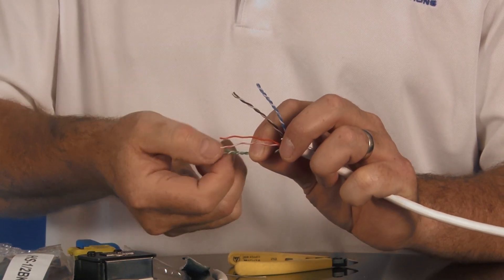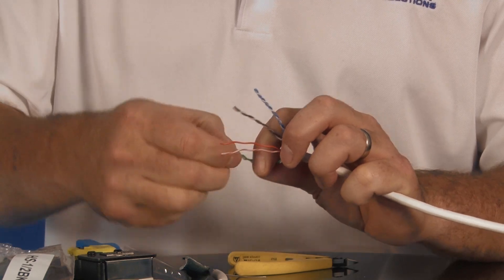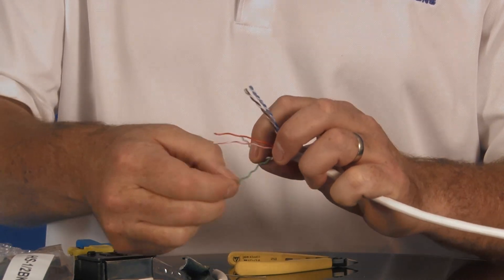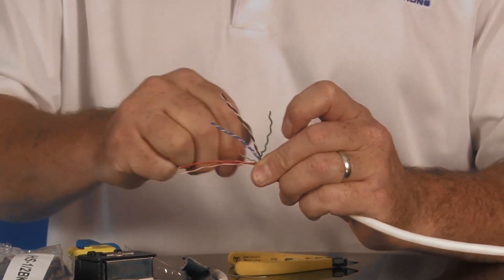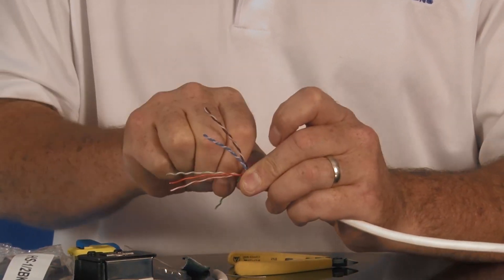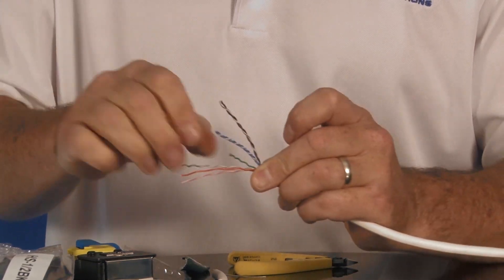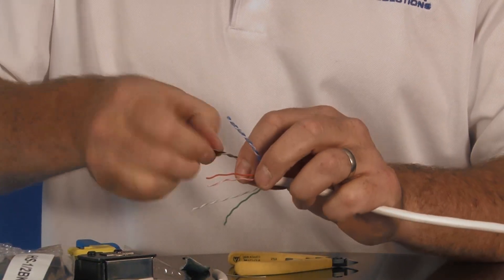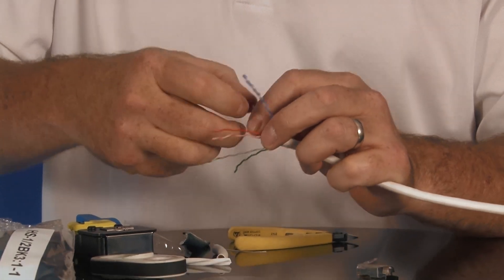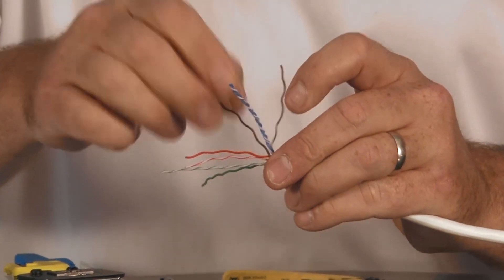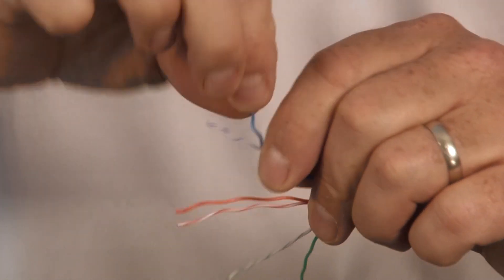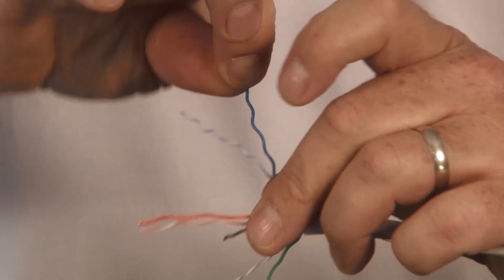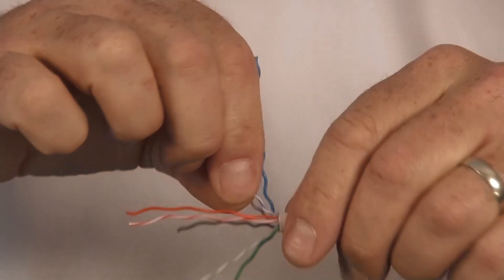You want to keep the conductors with each other. They're like striped. If you do have a cable that has the conductors, one is pure white and one is colored, you have to keep those together so you don't mess up your wiring code. You want to get all the convolutions out of it. This is probably the longest part of the entire termination is getting these things smooth and level.